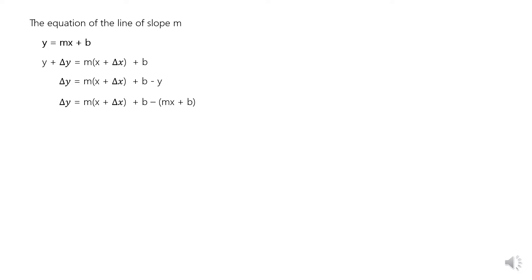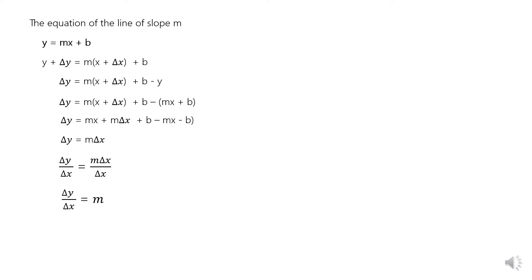Expanding the equation, Δy = mx + m·Δx + b − mx − b. Combining similar terms, Δy = m·Δx. Dividing the entire equation by Δx, the ratio Δy/Δx = m·Δx/Δx, and Δx cancels out. So Δy/Δx = m. Establishing the limit as Δx approaches 0, the limit of Δy/Δx equals m, which is the slope. Therefore, the slope of the line is also the slope of the curve.